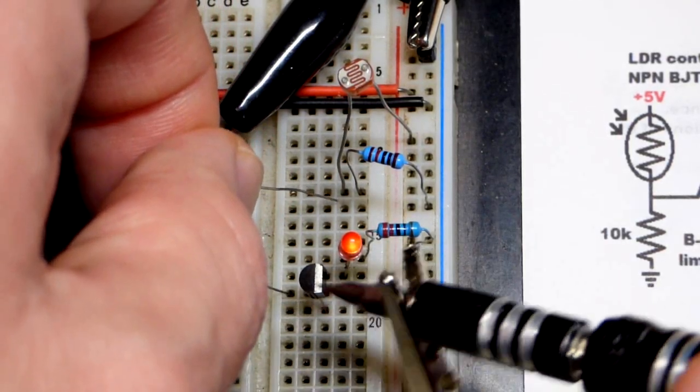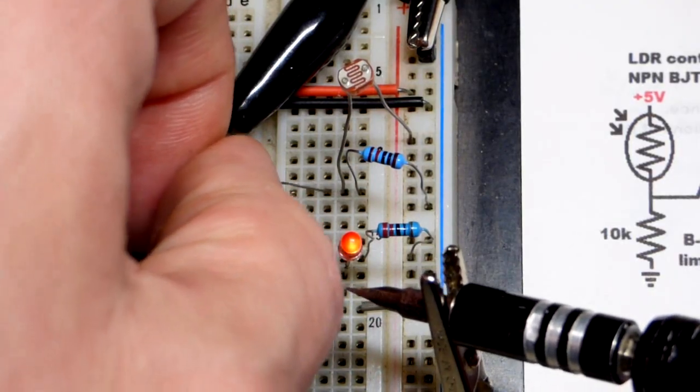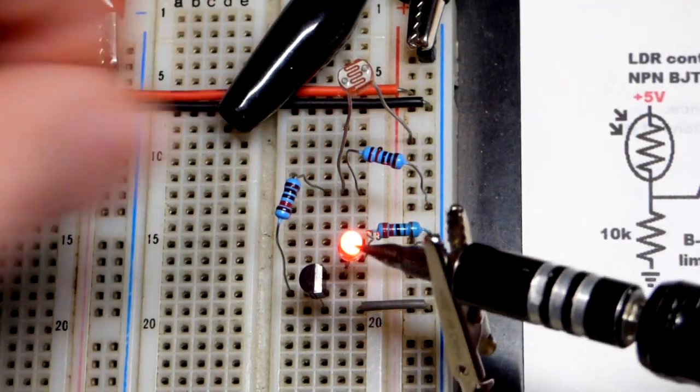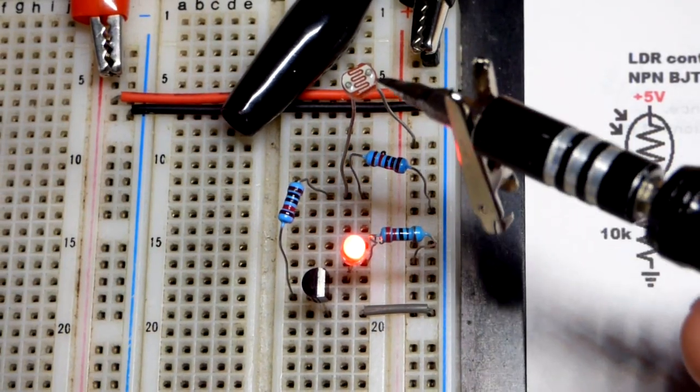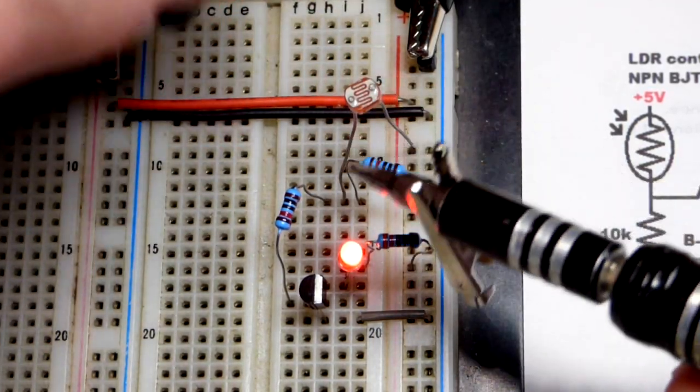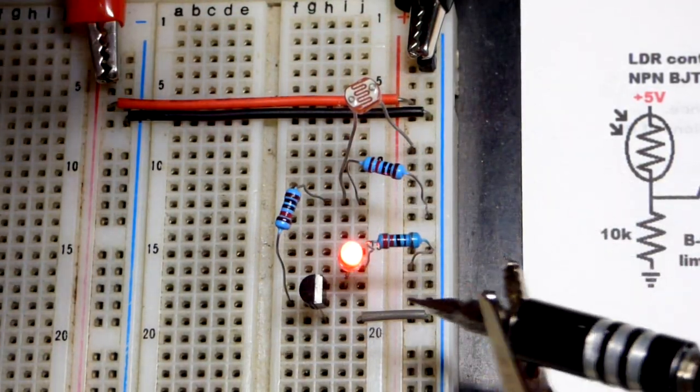We're going to take a 10k resistor and go to the voltage driver. My body can give a weak signal so it turns on a little bit. There you can see it's on. That's because it's bright enough. We got our light dependent resistor there. Current's flowing through the light dependent resistor.